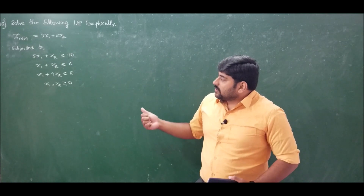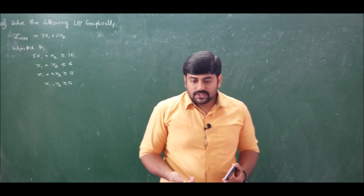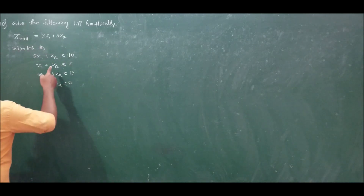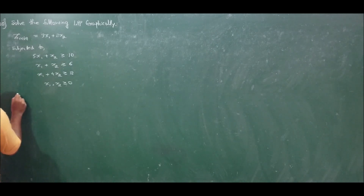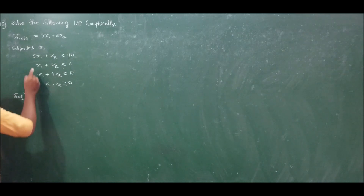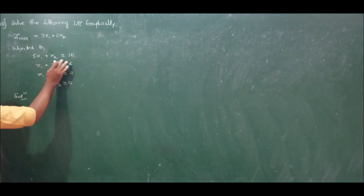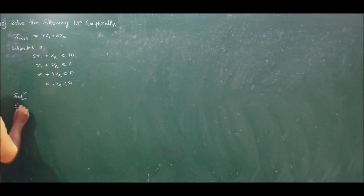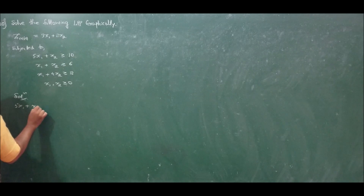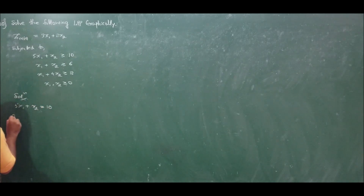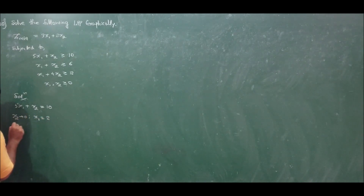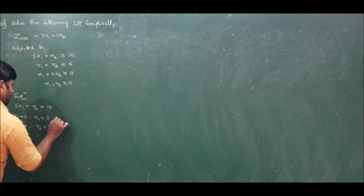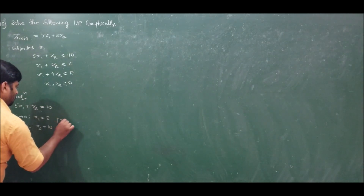First, let us find the coordinates of these three constraints. Convert all constraints to equation form, set one variable to zero and find the other. For the first constraint, 5x1 plus x2 equals 10: setting x2 to 0 gives x1 equals 2, and setting x1 to 0 gives x2 equals 10. Therefore, the coordinates of the first constraint are (2, 10).